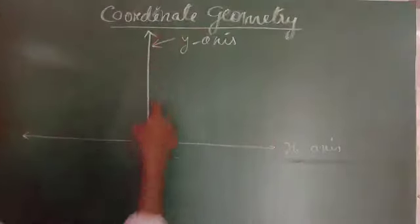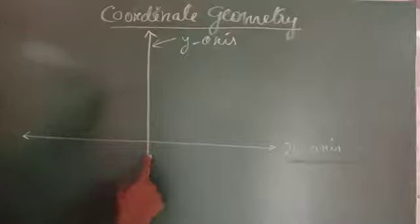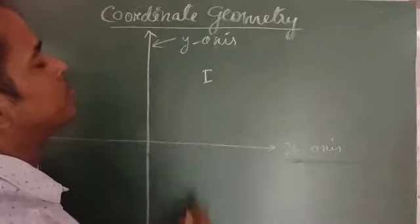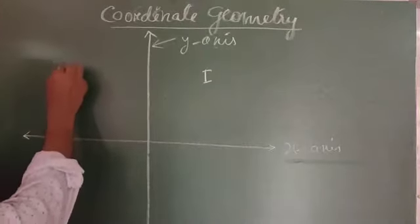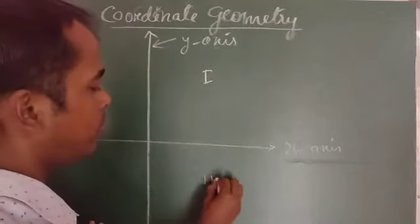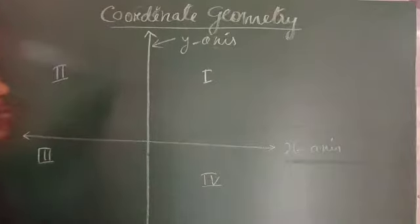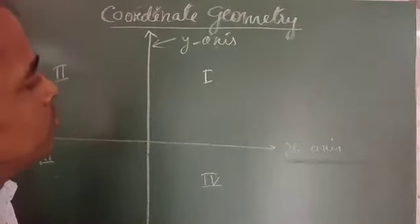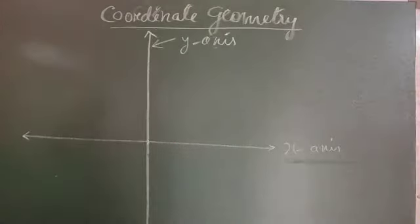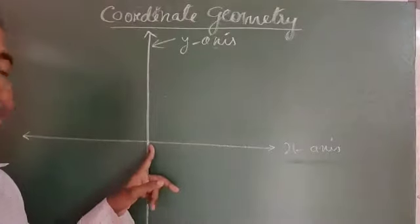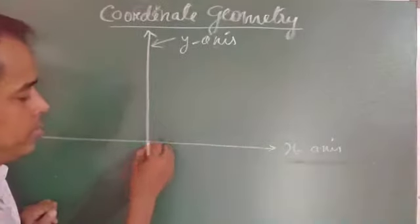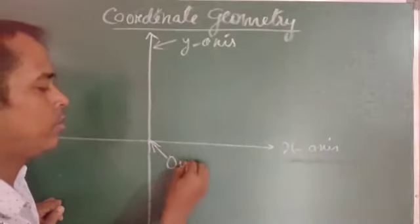So there are one, two, three, and four parts. This is the first quadrant, this is the second quadrant, this is the third quadrant, and this is the fourth quadrant. The intersecting point — that is, the common point of the two lines — is called the origin.